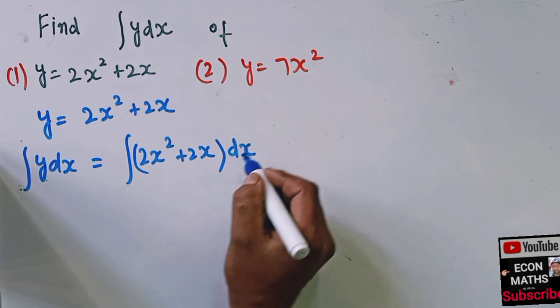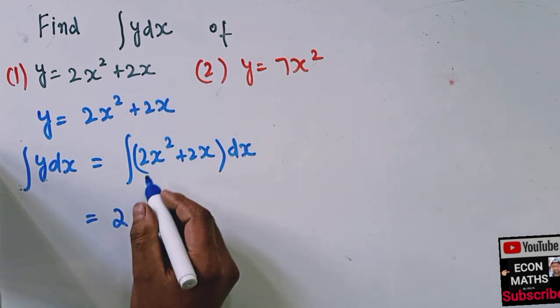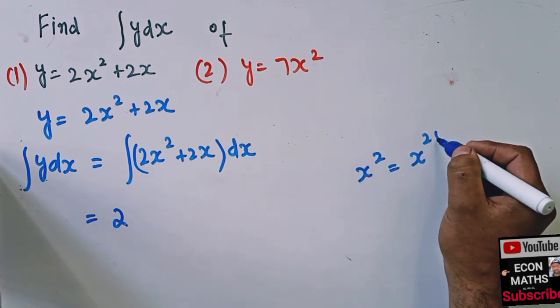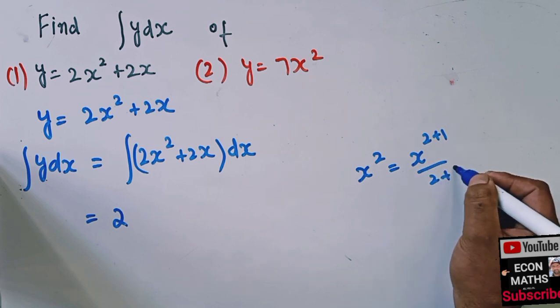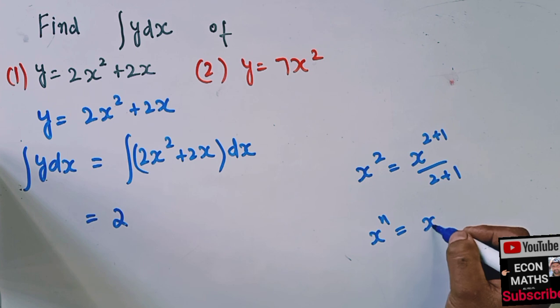Now we have here 2, the integral of x squared is simply equal to x raised to the power 2 plus 1 divided by 2 plus 1. If we have x raised to the power n, what we do is we add the exponent by 1 and divide with the resulting exponent, that is n plus 1.